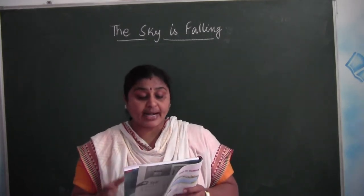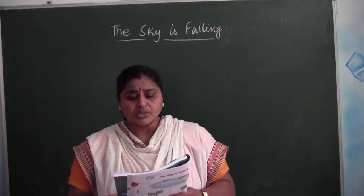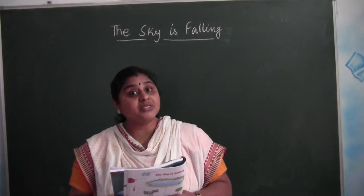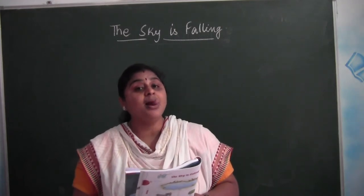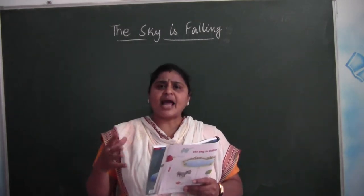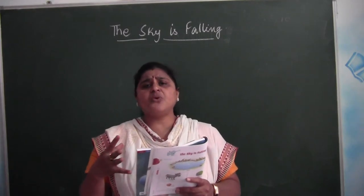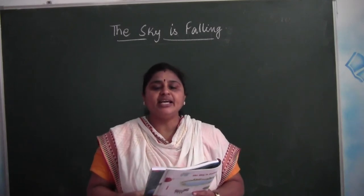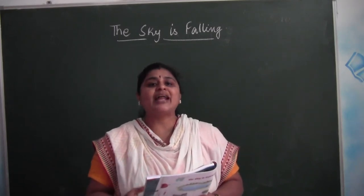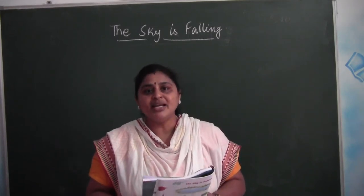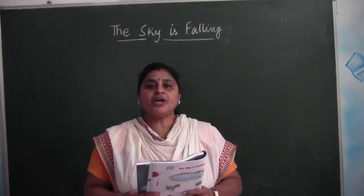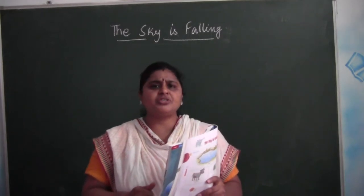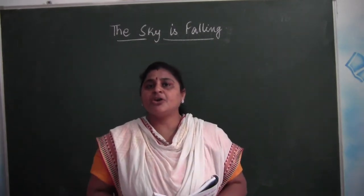Now the rabbit is telling: 'Oh no! The sky is falling. I must try and tell the king about it.' Who is the king, children? Lion. As the rabbit heard a very huge sound — thud — made by this coconut when it fell from the tree, the poor foolish rabbit thought: 'Oh my god, the sky is falling down. I should run and say this to the king of the jungle.'